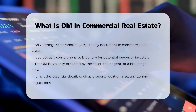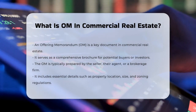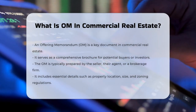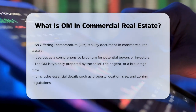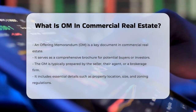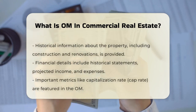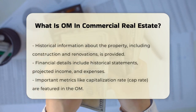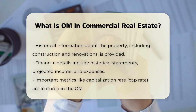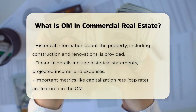It includes a lot of key details, such as the property's location, size, zoning regulations, and any unique features or amenities it might have. You'll also find information about the property's history, like when it was built, any renovations, and notable events.